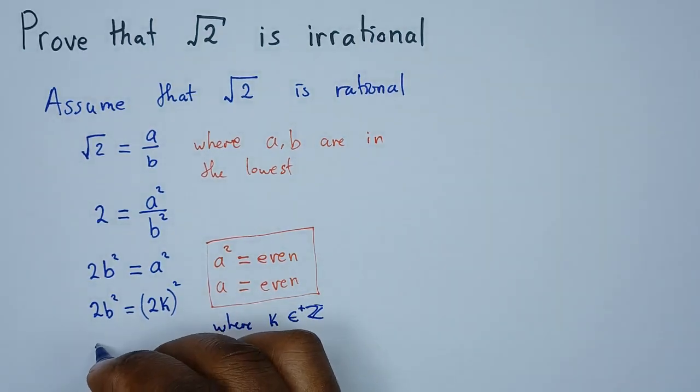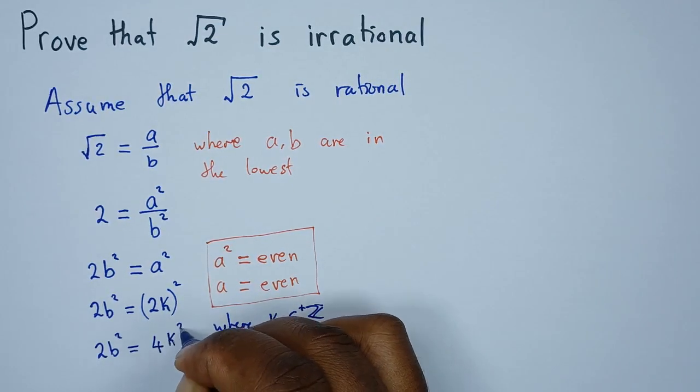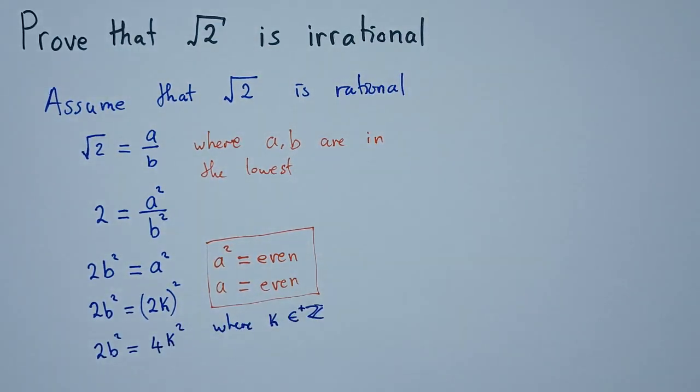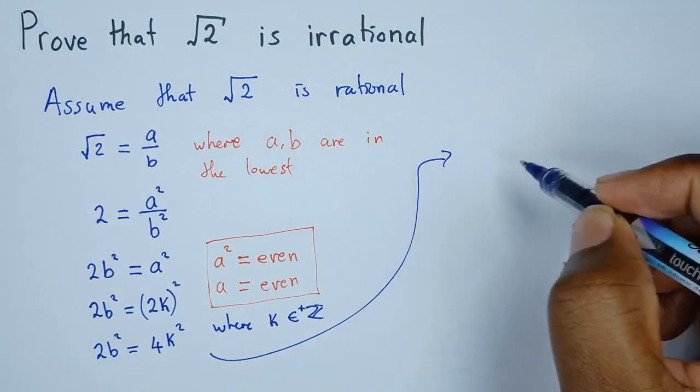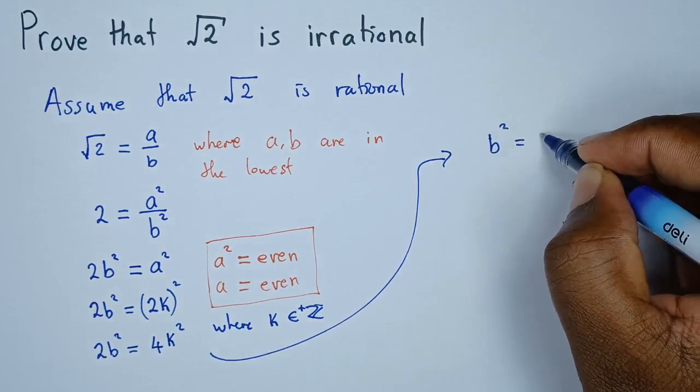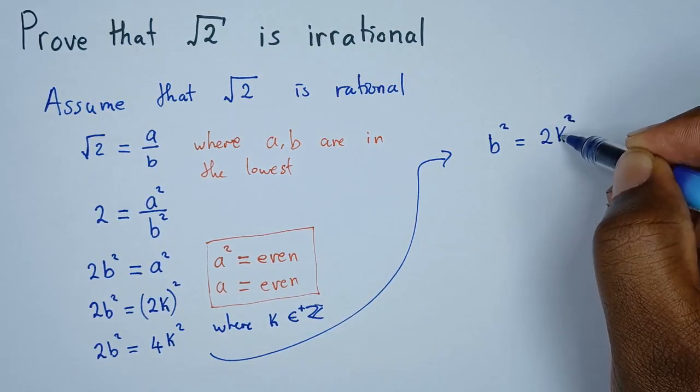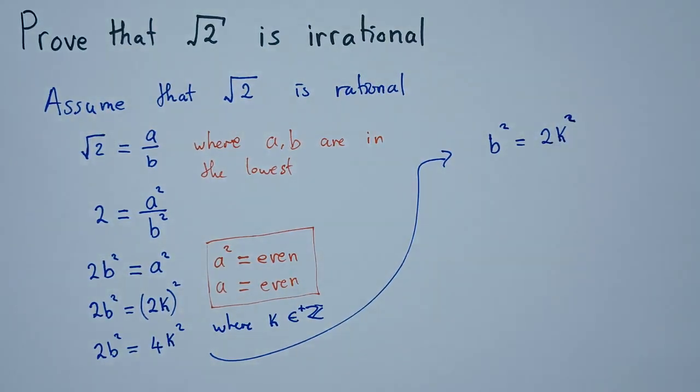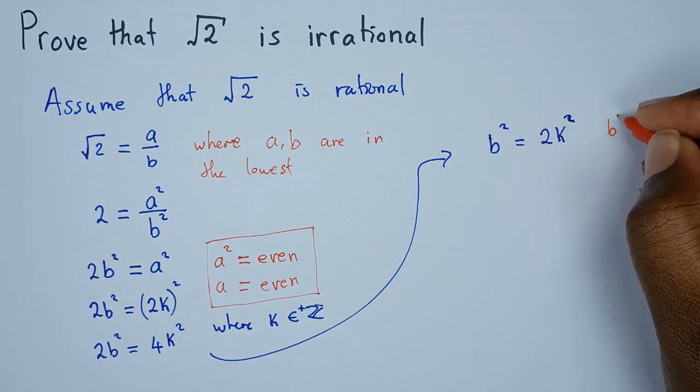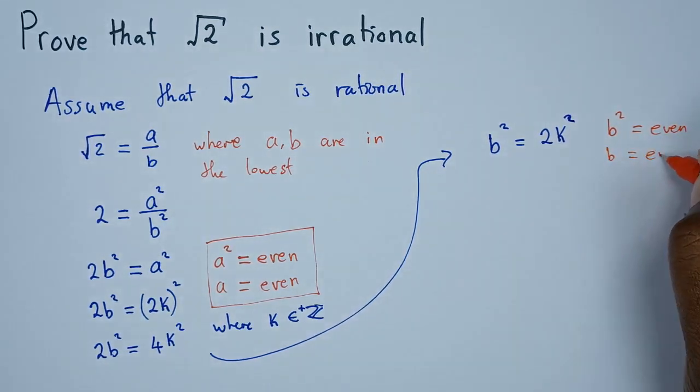If that's the case, then this statement will become 2b squared equals 4k squared like that. Then from there we can decide to divide both sides by 2. Hence, dividing both sides by 2, we'll have b squared equals 2k squared. Now what does this mean? Since we have k, an integer, multiplying with 2, this simply means that b is equally even. So b squared is even, then b is also even.